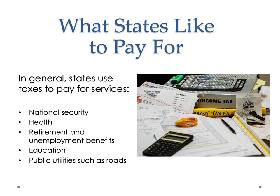Public goods are defined by two properties — this is important. They're not excludable and they're not subject to crowding. So public goods are non-excludable and non-rival. What does that mean? Public goods are not like pie — and by pie, I mean literally a pie. Think about an apple pie. Pie is both excludable and subject to crowding. If I have an apple pie, I can exclude you from it. I can say you don't get any pie, in which case you've been excluded.